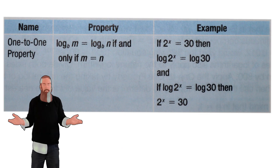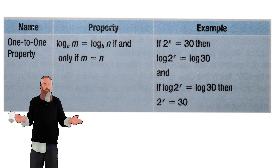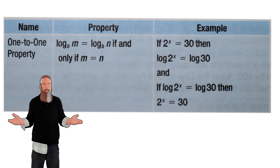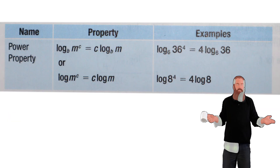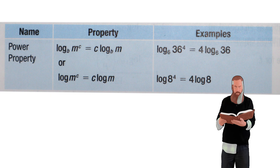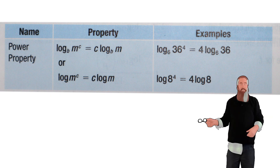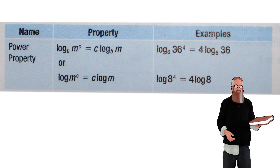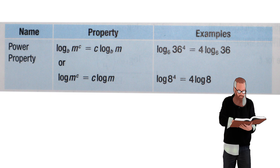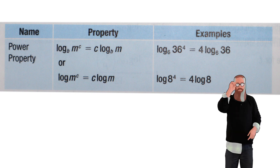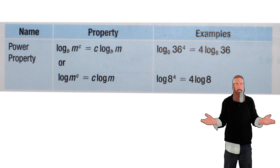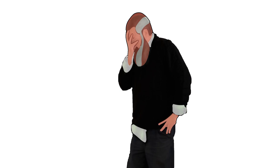Let's begin with the one-to-one property: log base b of m equals log base b of n if and only if m equals n. Next, examine the power property: given that m, n, and b are positive real numbers where b is not zero, then log base b of m to the c power is equal to c times log base b of m, or log m to the c power equals c times log m. We're going to apply these properties in the example that follows.